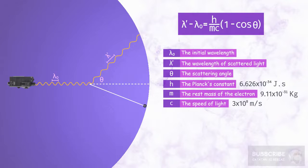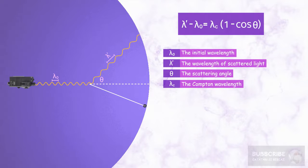h, m, and c are constants. So h over m times c has a fixed value. This value is often referred to as lambda c, or Compton wavelength.